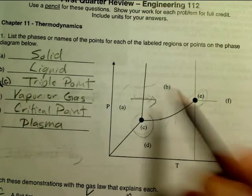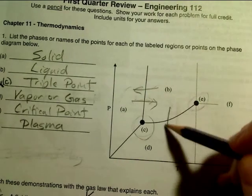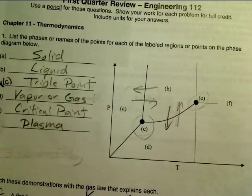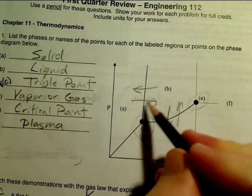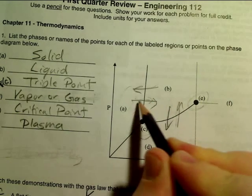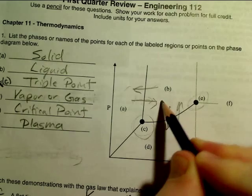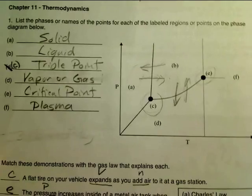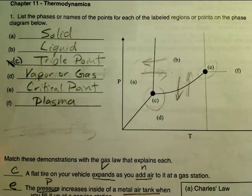On the exam I will ask you what these transitions are however. So make sure that you not only memorize the different regions of the phase diagram but are able to tell, for example, that this one right here is going from solid into liquid which would make it melting. Be able to identify the name of that process and the name of that phase change.